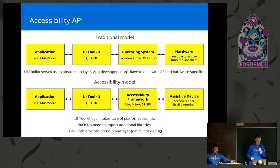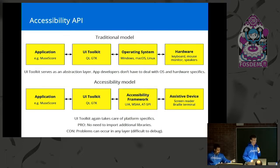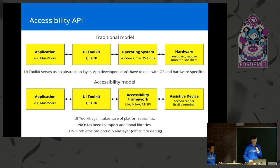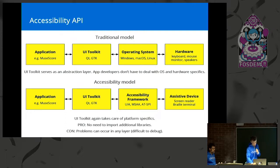So how do you program for an accessible device? If you're programming for an ordinary monitor or keyboard, you don't do that directly — it's all done through a UI toolkit. And the good news is that the same is true for accessibility: you can use the same toolkit, Qt, and in theory it will take care of accessibility for you, with no need to import additional libraries. But if a problem occurs, it could occur in any of these layers — the toolkit, the framework, or the device — and it's not always obvious where the problem lies.